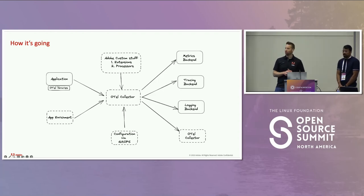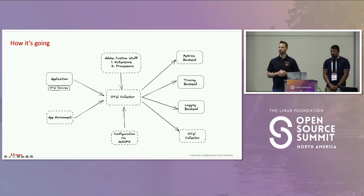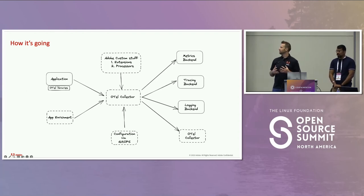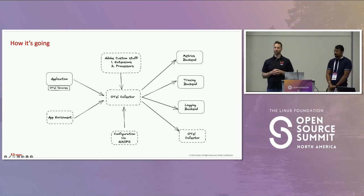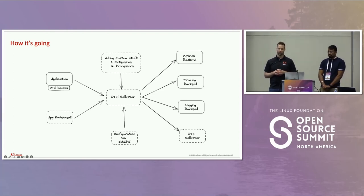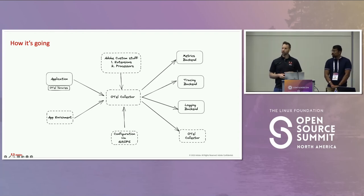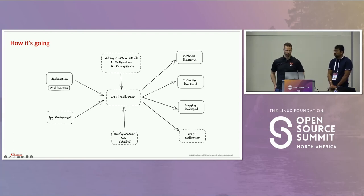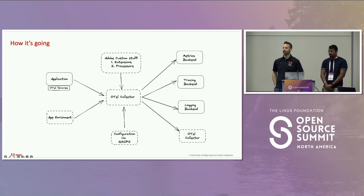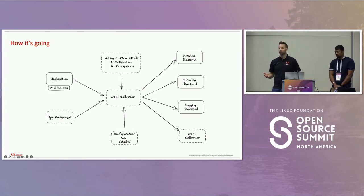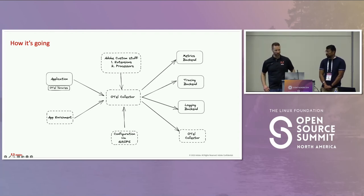So that's how it started. How is it going now? We've got this diagram with a bunch of arrows — we'll talk about all of these boxes. Going left to right, the OpenTelemetry Collector sits in a number of critical paths. We instrument applications using OpenTelemetry libraries, do application enrichment, bring in Adobe-specific data, and enrich pipelines as it flows through. We have custom extensions and processors, configuration via GitOps, and the collector dynamically sends to multiple destinations. Sometimes we also send collector data to other collectors for further processing — it's the Swiss Army knife of observability.